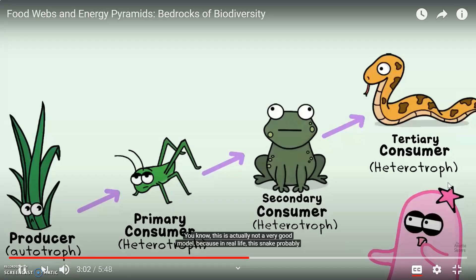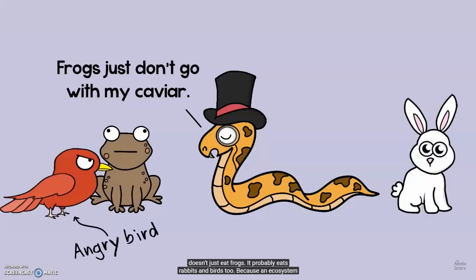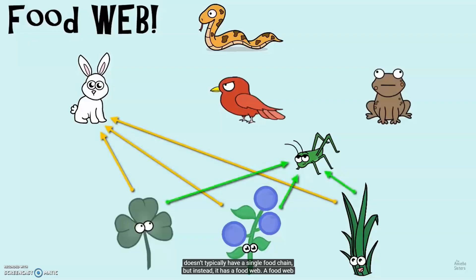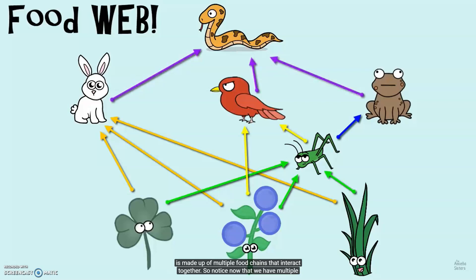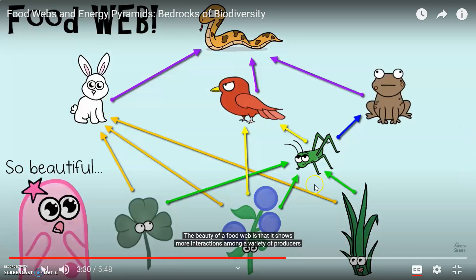This food chain is actually not a very good model, because in real life this snake probably doesn't just eat frogs — it probably eats rabbits and birds too. An ecosystem doesn't typically have a single food chain. Instead, it has more of a food web. A food web is made up of multiple food chains that interact together. Notice how we now have multiple food chains tied together with our original to make a food web. Food webs are more symbolic of real life, because a chain is just singular and linear.